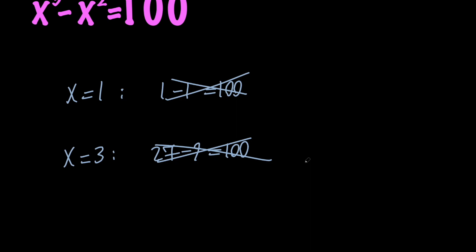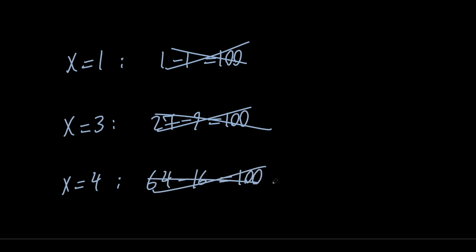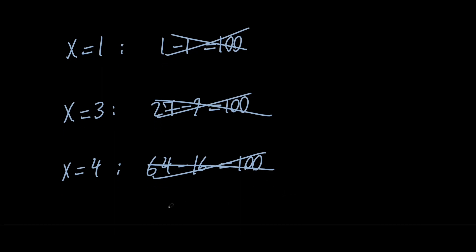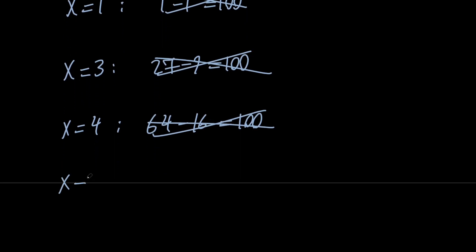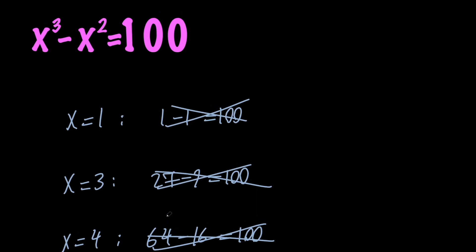So we're getting close. Let's go ahead and increase x values again and replace x with 4. So we're going to get 64 minus 16 equals 100, which is something false. But once we replace x with 5, we're going to get 125 minus 25 equals 100, which is something 100% true.